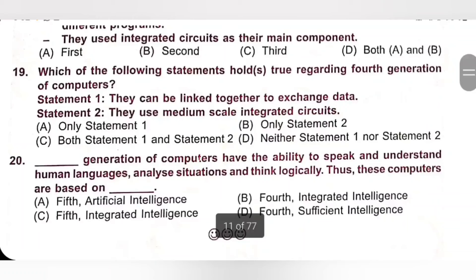Question 19: Which of the following statements hold true regarding fourth generation computers? Statement 1: They can be linked together to exchange data. Statement 2: They use medium scale integrated circuits. Statement 2 is false — fourth generation computers use microprocessors, and integrated circuits were used by third generation computers. Only statement 1 is true. Option A is the correct answer.